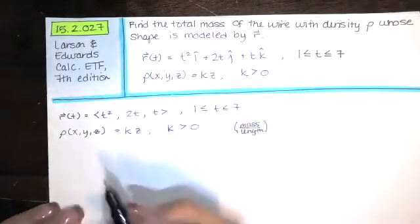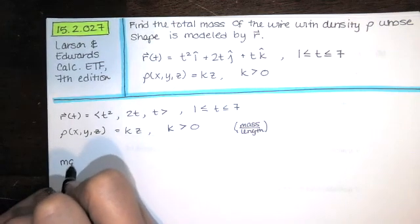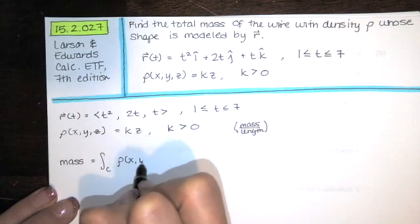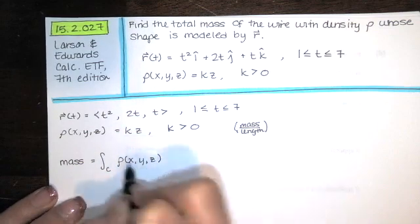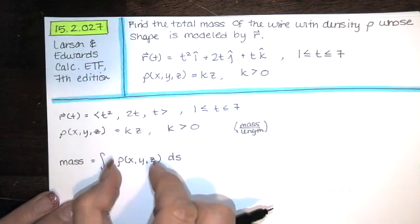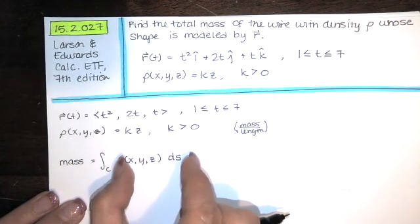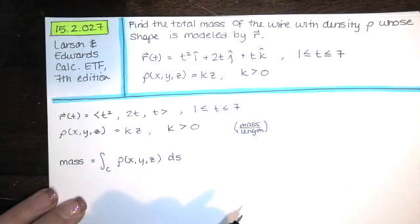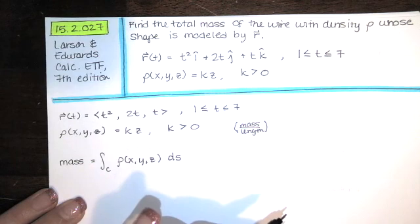So if I want to find the total mass of the wire, I'm just going to evaluate the line integral of that density function, which is mass per unit length times a tiny length piece. Mass per unit length times length is going to give me the mass of a little piece. We're going to add those up over the entire curve, and that's going to give us the total mass.